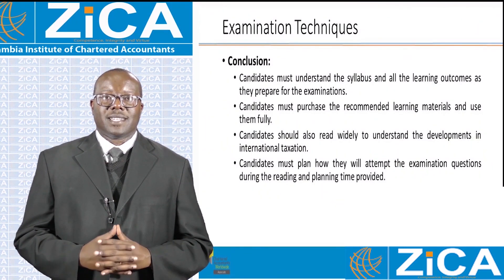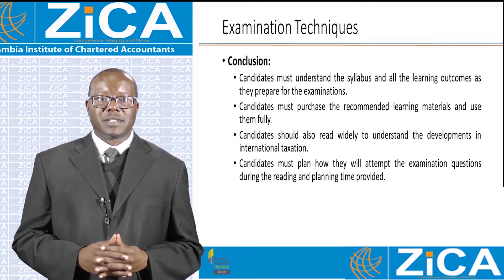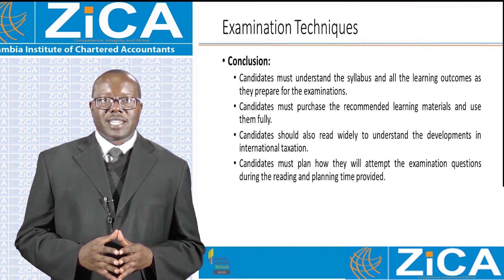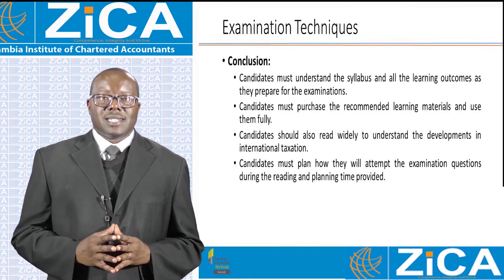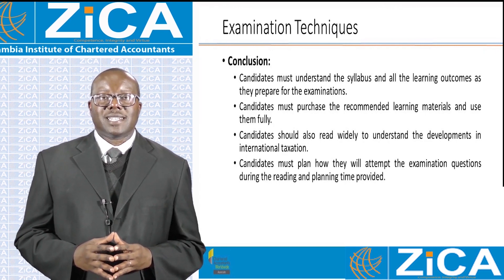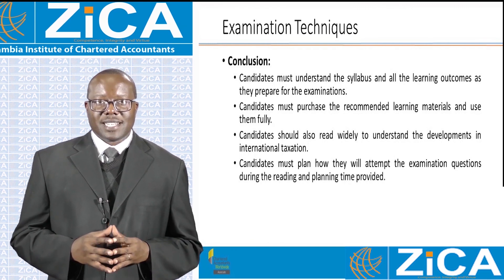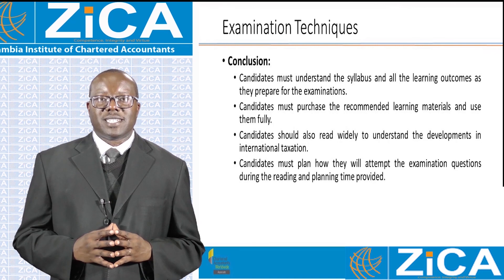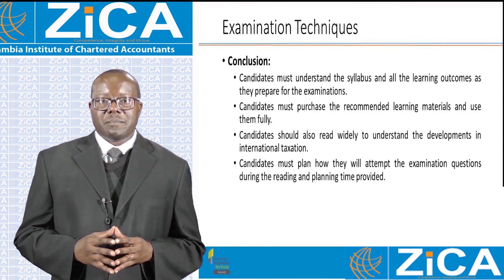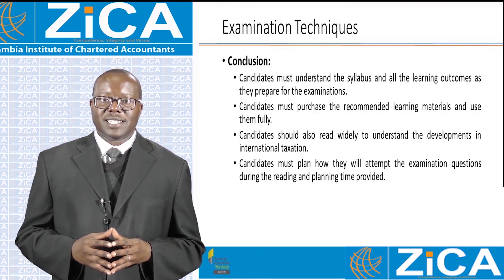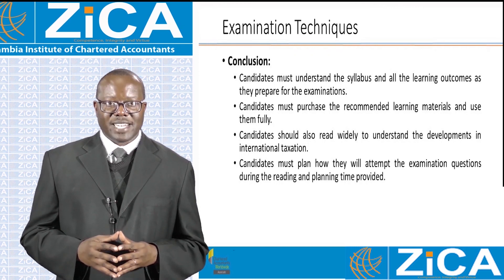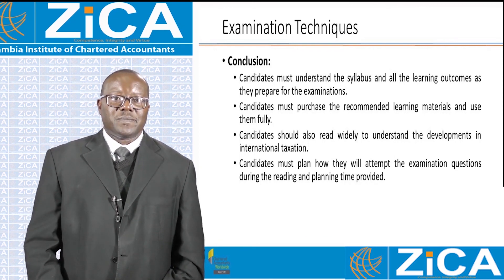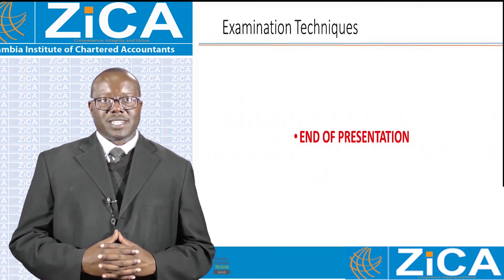In conclusion, to be successful in the Paper D5 International Taxation examination, candidates must understand the syllabus and all learning outcomes as they prepare. They must purchase recommended learning materials and use them fully, and read widely to understand developments in international taxation. Candidates must plan how they will attempt the examination questions during the 15 minutes of reading and planning time provided before commencement. This brings us to the end of the presentation.